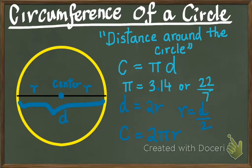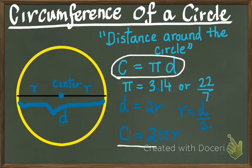Now, depending on the problem, if the problem is in terms of diameter, then you could use the formula c equals pi d to calculate the circumference of a circle. Now, if you were given the radius and asked to find the circumference of a circle, then you could use c equals 2 pi r to find the circumference of a circle.